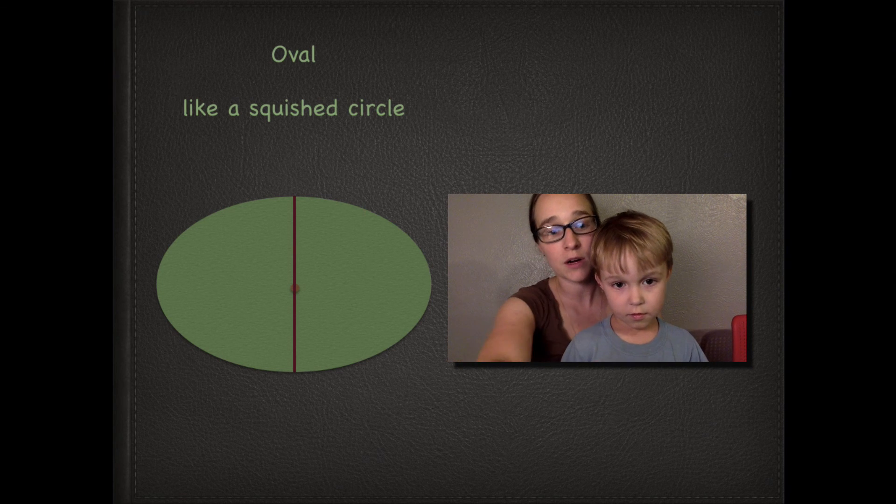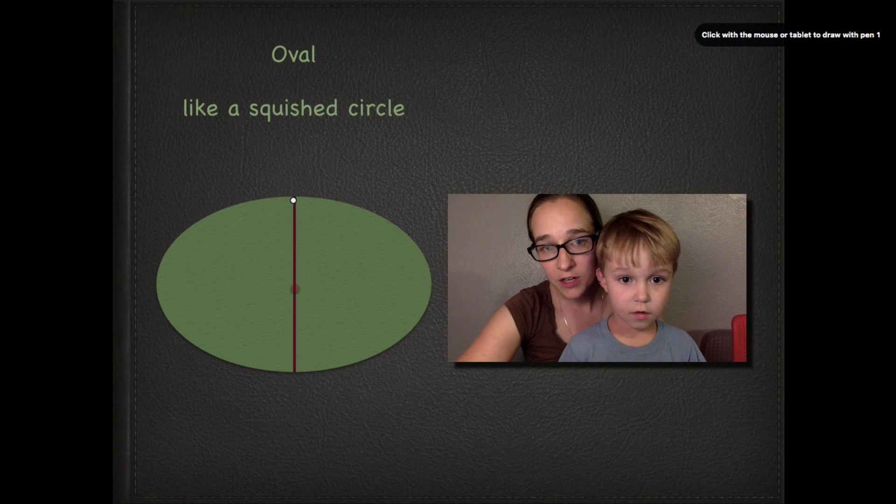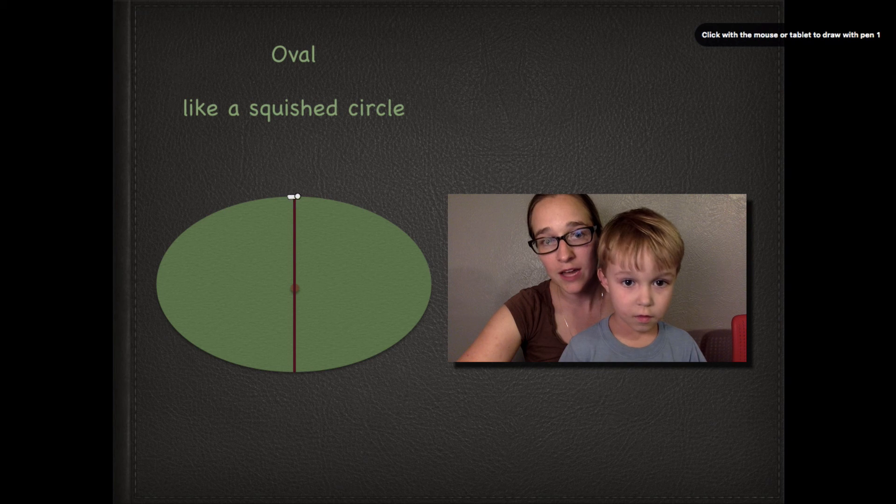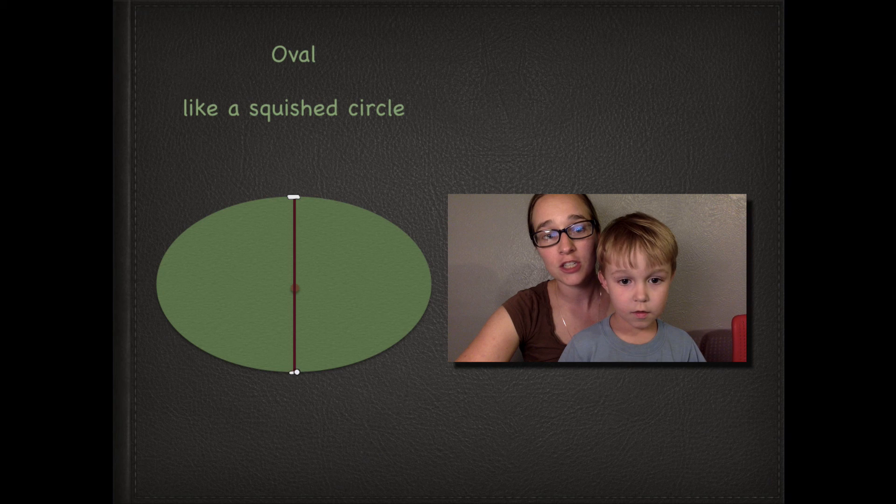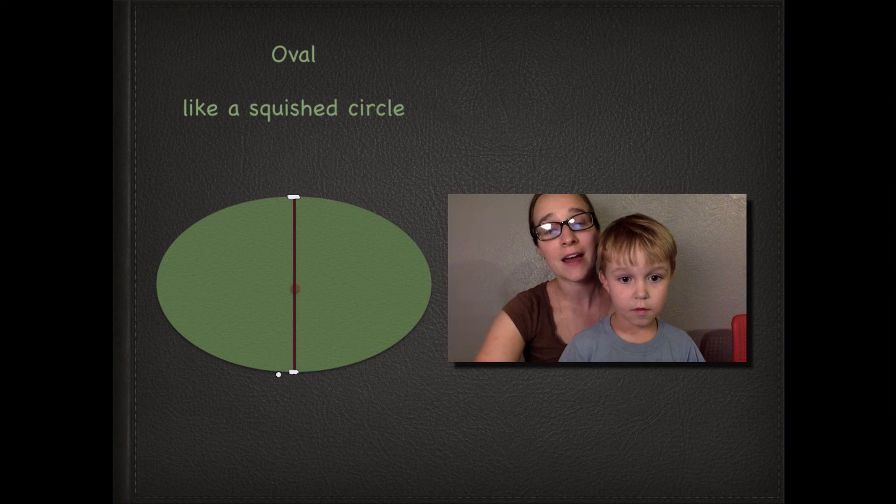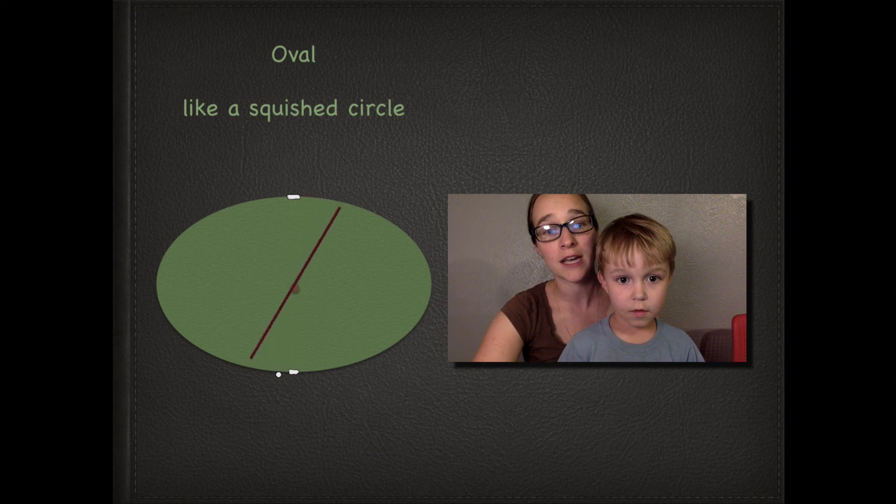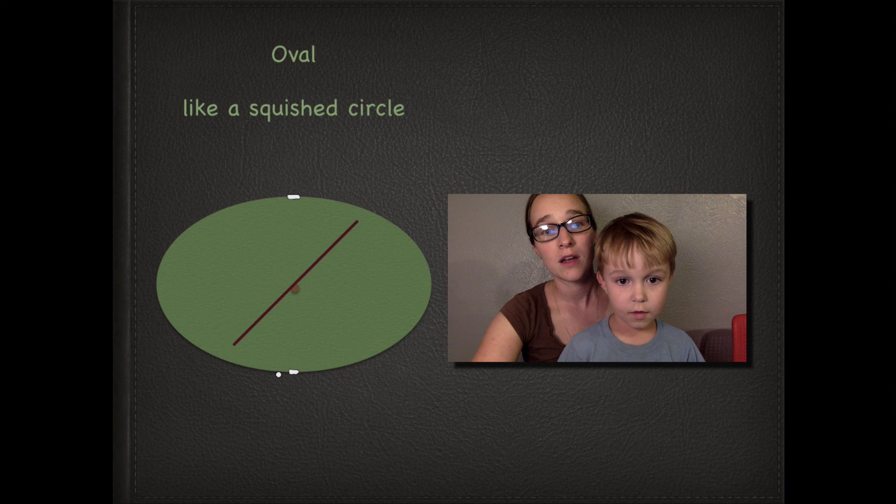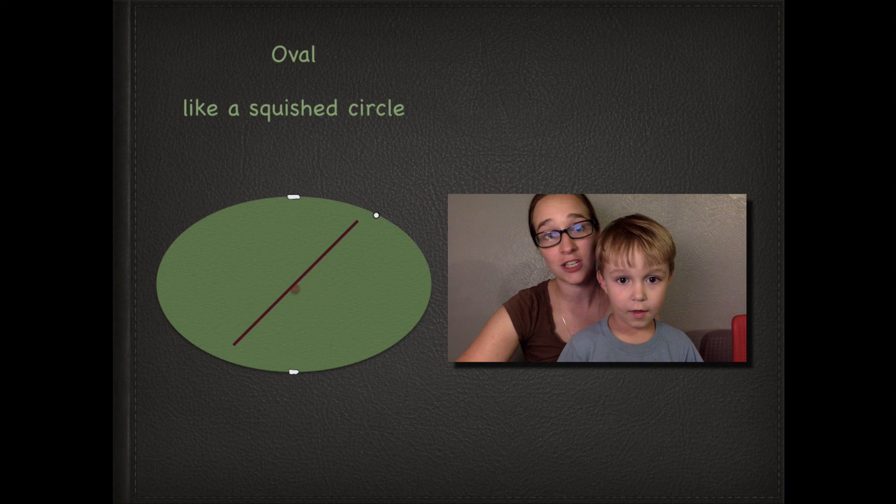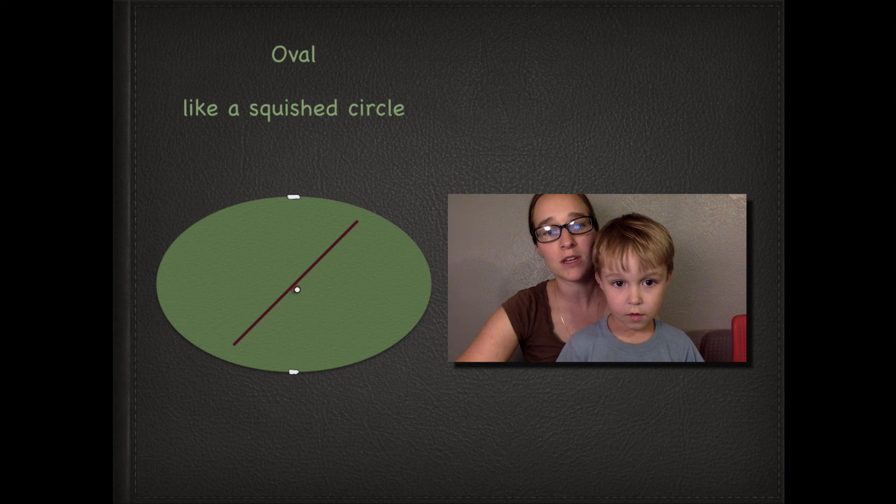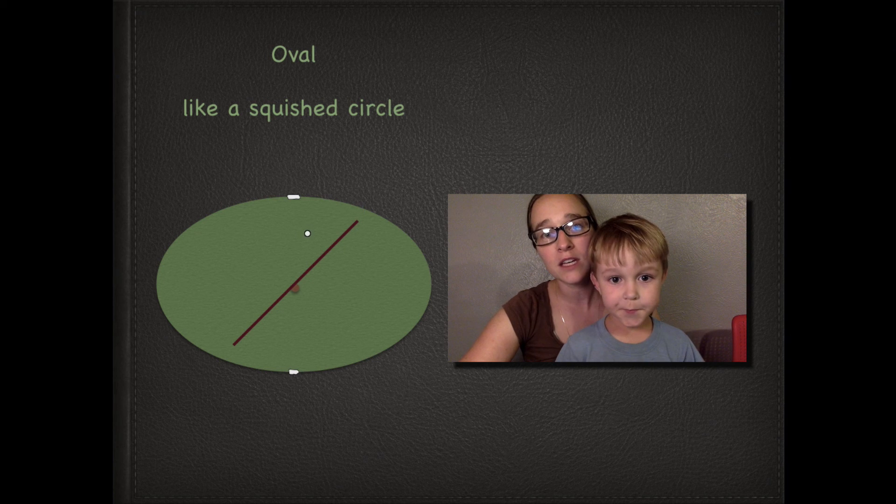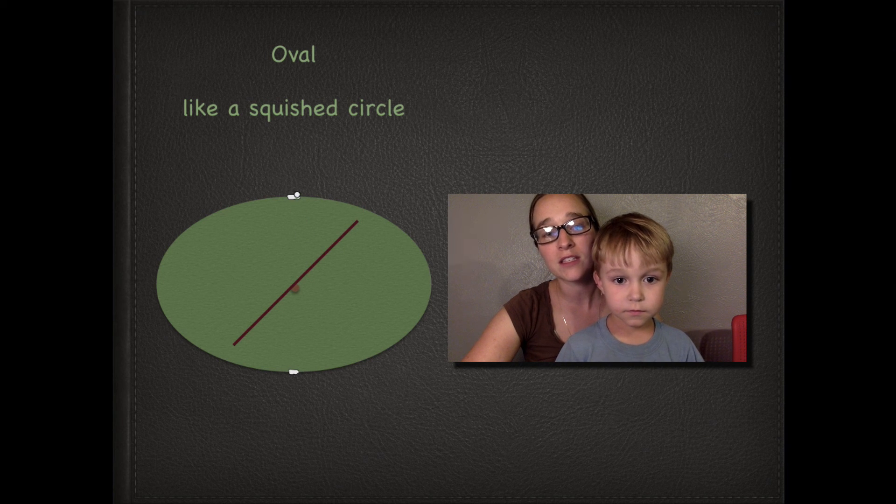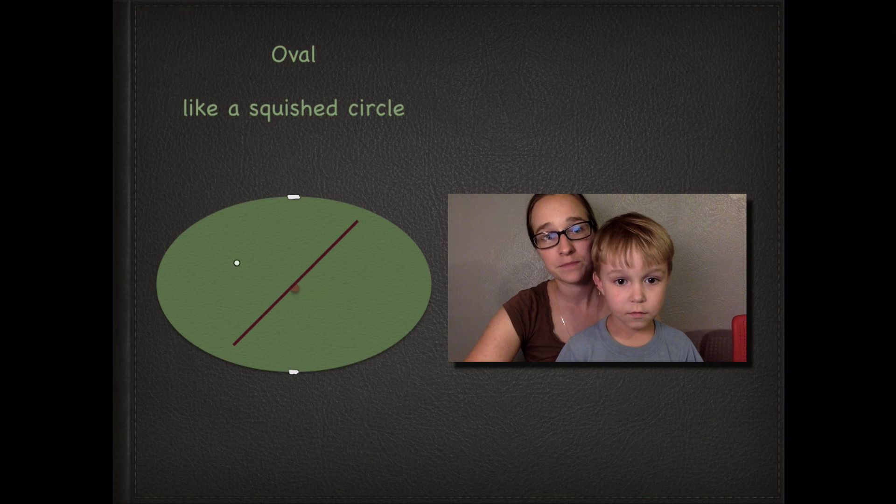And you can see with our diameter here, it's touching the edge of the oval here, it's touching the midpoint, and it's touching the edge down here. But now with our oval, if we rotate our diameter, it is not touching the edge of the oval here. It's still touching our middle here, but it's not touching our edge here. And that's because unlike a circle, an oval is shorter one way than it is the other way.